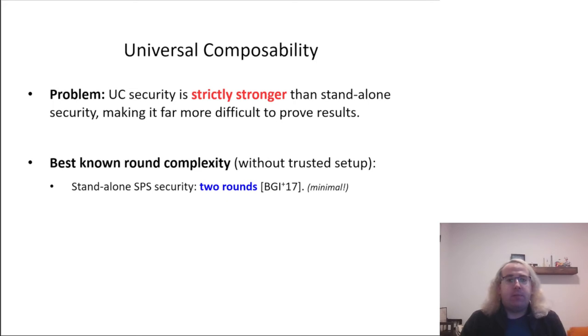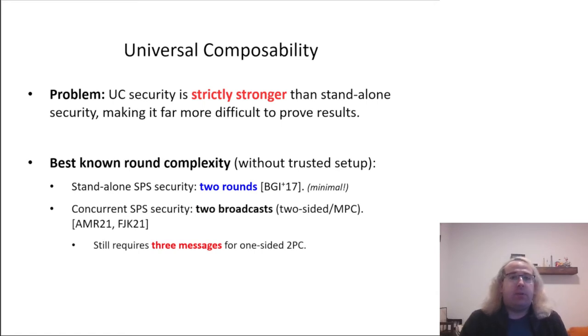While a theoretical minimum of two rounds was achieved for standalone security even prior to our results, the best known protocols for concurrently secure two-party computation, even enabling composability, run in two simultaneous broadcast rounds and would thus require three single message rounds, and the best known UC secure protocol runs in a large unspecified constant number of rounds.